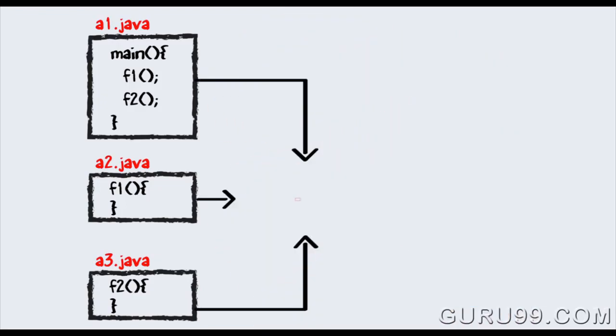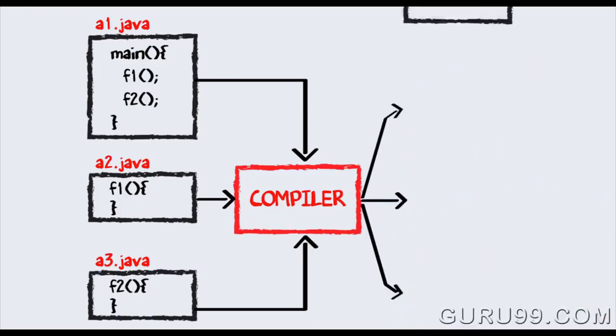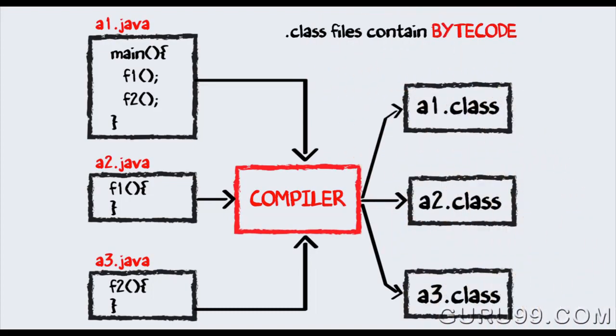The compiler will compile the three files and produce corresponding .class files, which consist of the bytecode. Unlike C, no linking is done.